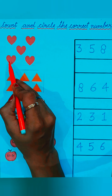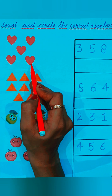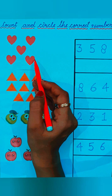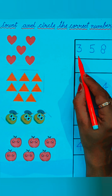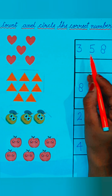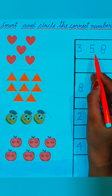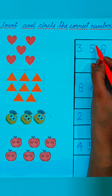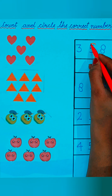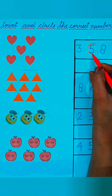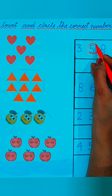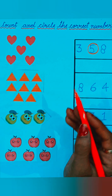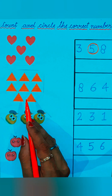Now see the next. Let's count the hearts: one, two, three, four, five — five hearts are given here. So on which number will we circle? Three, five, four, eight — which number is correct? Number five is correct. We will circle on number five because five hearts are given here.